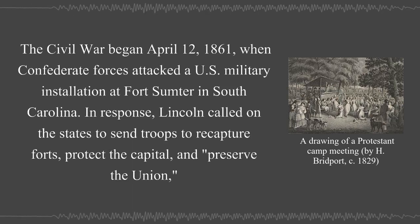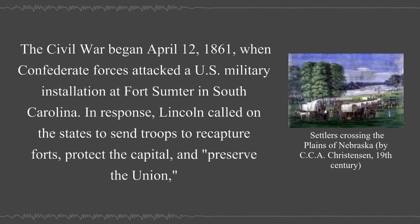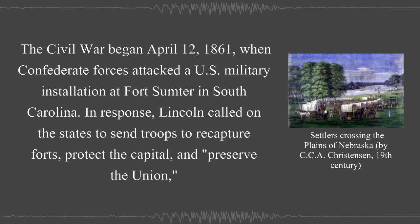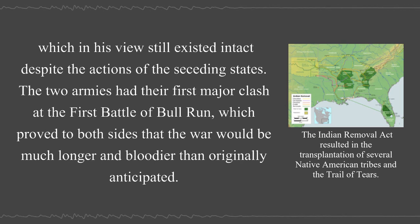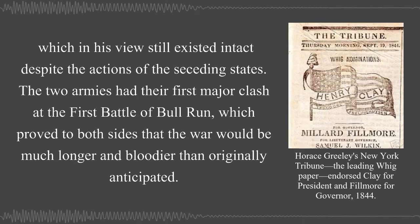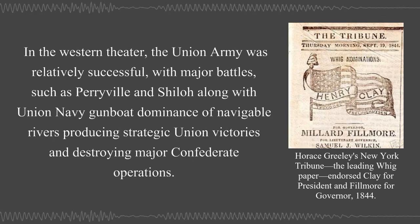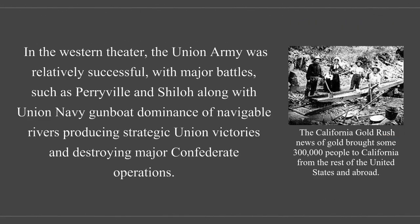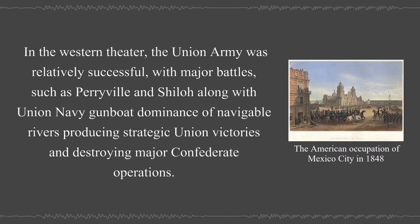The Civil War began April 12, 1861 when Confederate forces attacked a U.S. military installation at Fort Sumter in South Carolina. In response, Lincoln called on the states to send troops to recapture forts, protect the capital, and preserve the Union. The two armies had their first major clash at the First Battle of Bull Run, which proved to both sides that the war would be much longer and bloodier than originally anticipated. In the western theater, the Union army was relatively successful, with major battles such as Perryville and Shiloh, along with Union Navy gunboat dominance of navigable rivers producing strategic Union victories and destroying major Confederate operations.